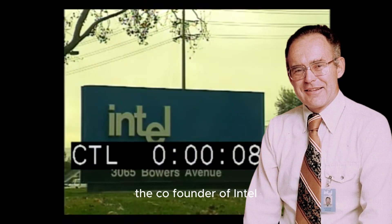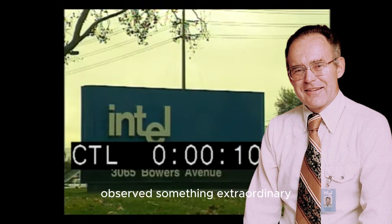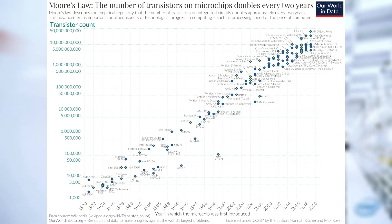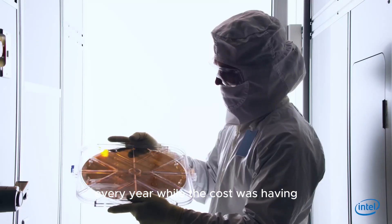Gordon Moore, the co-founder of Intel, observed something extraordinary. He noticed that the number of transistors on a microchip was doubling every year, while the cost was halving.